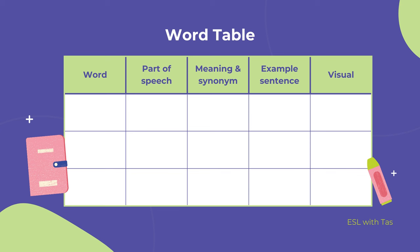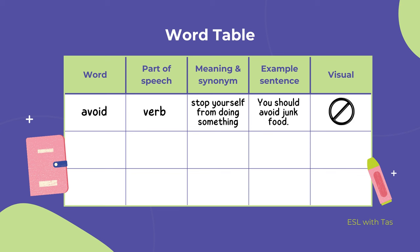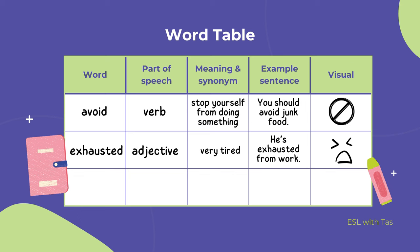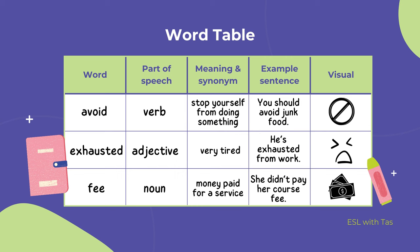Then start giving students the words you want to review one after another, and let them use this table as a reference to explain the meaning. Here we're also tackling a little bit of grammar and a little bit of art. This is literally one of the easiest revision activities to do, and it's very student-centered and encourages teamwork.